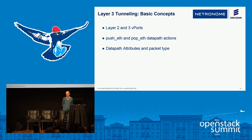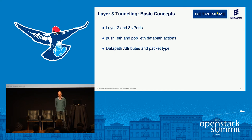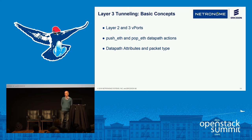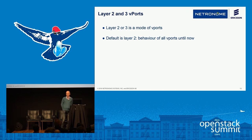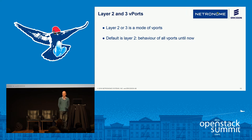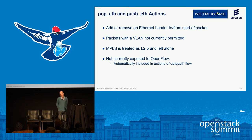There are broadly three areas of the code that we had to touch to implement this. One is to distinguish between Layer 2 and Layer 3 V-ports. Another is two new actions — a push and pop ethernet. And lastly, some attributes to be able to recognize in a flow whether or not it's L2 or L3. On the V-ports: the winning approach is to simply have a mode for the V-port. The default mode is Layer 2, which is the behavior of all V-ports up to now. We then add a new mode which is Layer 3. For the push and pop ethernet actions: conceptually this is quite simple — push ethernet takes a packet and adds an ethernet frame, and pop ethernet does the opposite.